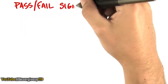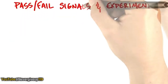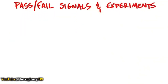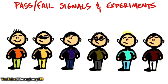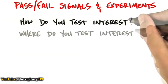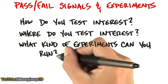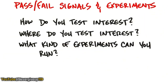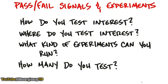We've been talking about pass-fail signals and experiments. As you get out of the building and start talking to potential customers, you need to set up some experiments. How do I know these are the right customers or the right buyers? You want to set up a series of experiments to test interest and figure out where to test it, what kind of experiments to run, and how many to test.